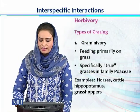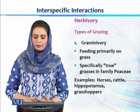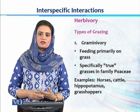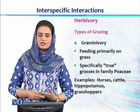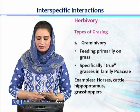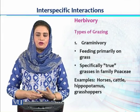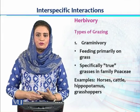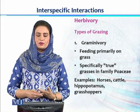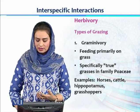Grazing can be divided into a few categories. The first is Graminivory — a feeding strategy where herbivores feed primarily on true grasses belonging to the family Poaceae, the grass family. Horses, cattle, hippopotamus, and grasshoppers are examples of Graminivores.